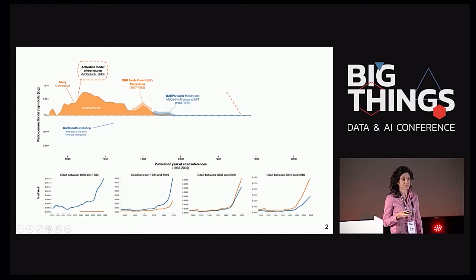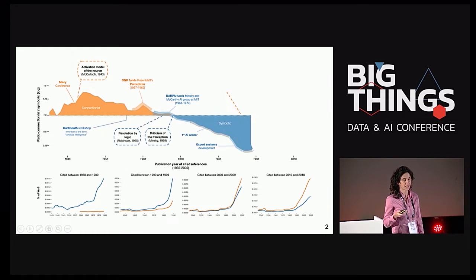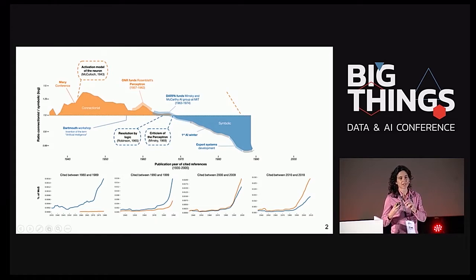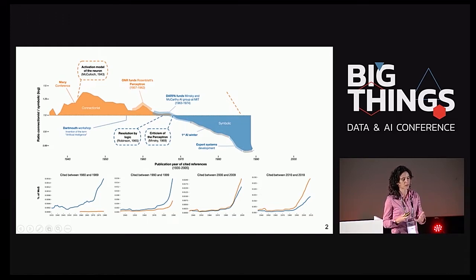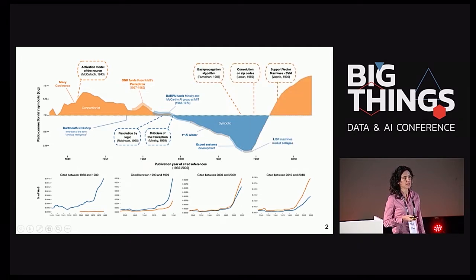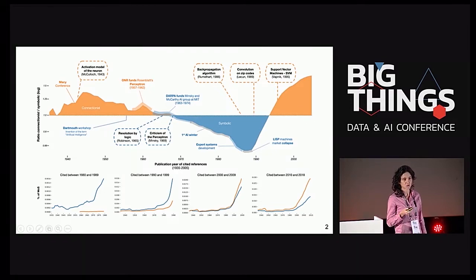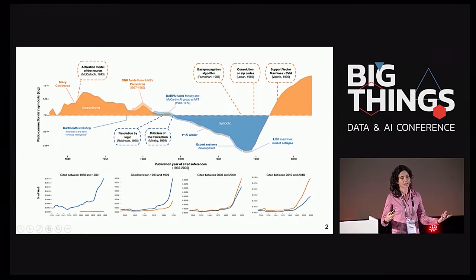Primero, la conectivista fue el modelo basado en neuronas, como en el cerebro, el auge del perceptrón. Después, la corriente simbólica en la que se conceptualiza un modelo, en la que el conocimiento de los expertos se traslada a los modelos, está basado en reglas y es deductivo. Tuvo un pico y después se desinfló. Y ahora vemos cómo ha vuelto a resurgir la inteligencia artificial basada en datos, que es un conocimiento inductivo: a partir de datos entendemos el entorno.